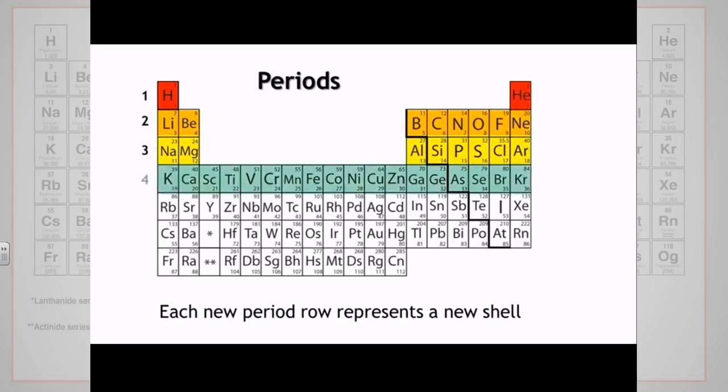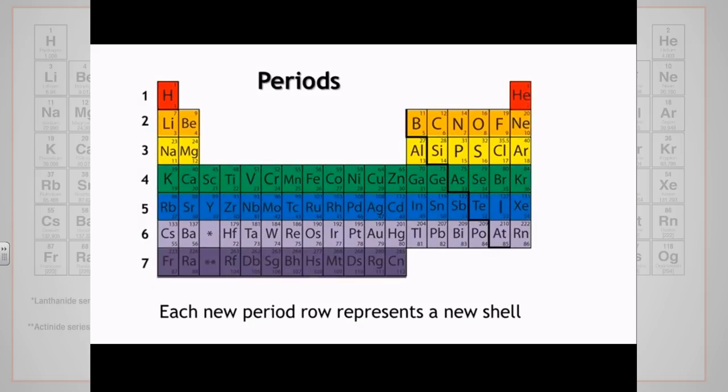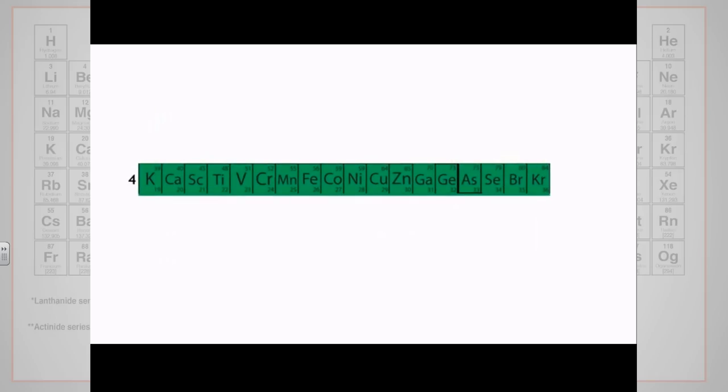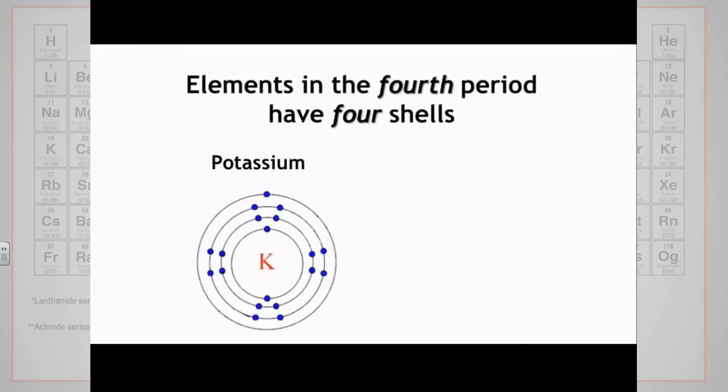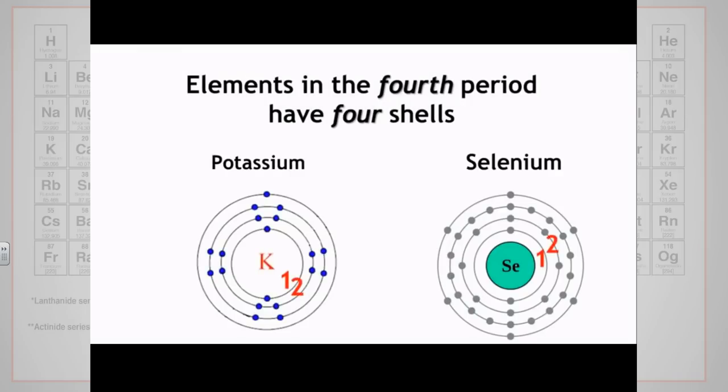Elements in the first period have one shell, and as we go down, the shells increase. Hydrogen is in the first period. It has one shell. Potassium is in the fourth period, and has four energy shells, as do all the other elements in this period.